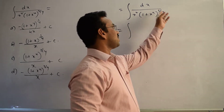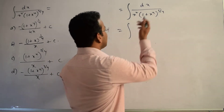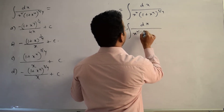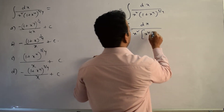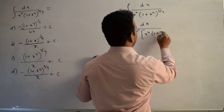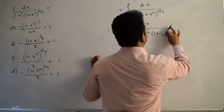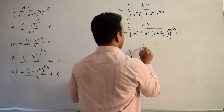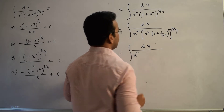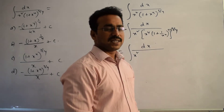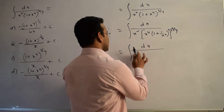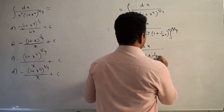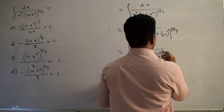If I take x⁴ common from inside the bracket in the denominator, I can simplify easily. Taking x⁴ out gives ∫ dx / [x² · (x⁴)^(3/4) · (1 + 1/x⁴)^(3/4)]. Since (x⁴)^(3/4) = x³, we get x³ · x² = x⁵ in the denominator, giving ∫ dx / [x⁵ · (1 + 1/x⁴)^(3/4)].